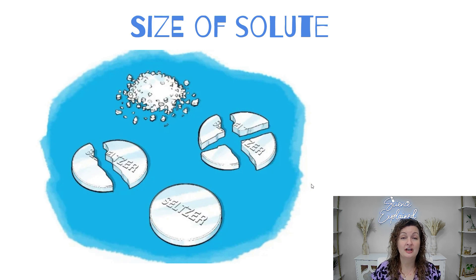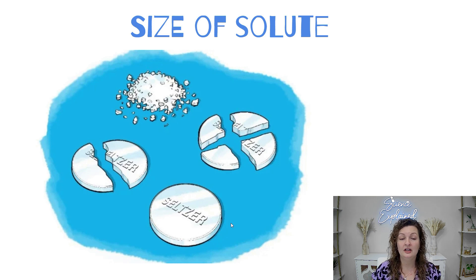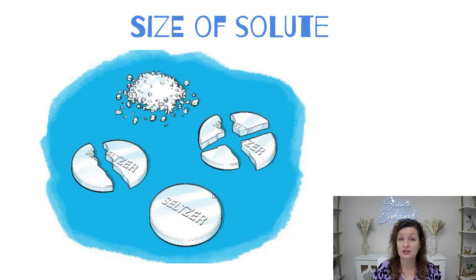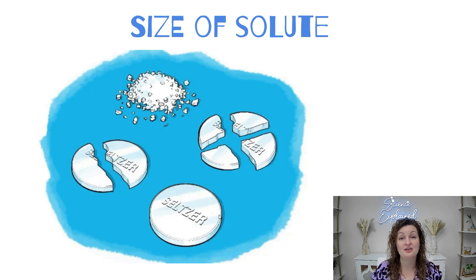Now the size of the solute also matters — it's really the surface area that is contributing to that. If you have a whole Alka-Seltzer tablet and you're going to dissolve it in a cup of water, this is going to take a little bit of time because it has a very low surface area. It's only exposed on the outside, which means all of the particles on the inside are not being touched by our solvent — water. Each layer has to get smaller and smaller to hit each molecule on the inside. But if we go ahead and crush it up, the smaller we can get it, the more surface area we're exposing and the faster it can dissolve. So the most crushed will dissolve fastest and the whole tablet will be the slowest.